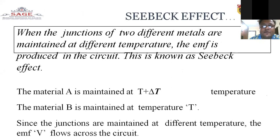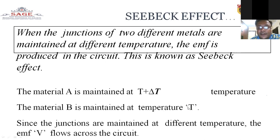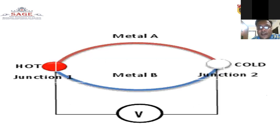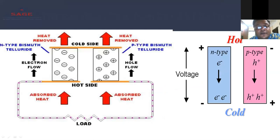At the junctions of two different materials maintained at different temperatures, an EMF is produced in the circuit — this is the Seebeck effect. Material A is maintained at temperature T + ΔT (the higher temperature) and material B is at temperature T (the lower temperature). Since the junctions are at different temperatures, EMF flows across the circuit. The diagram shows hot junction one and cold junction two connected by wires with metal A and metal B.